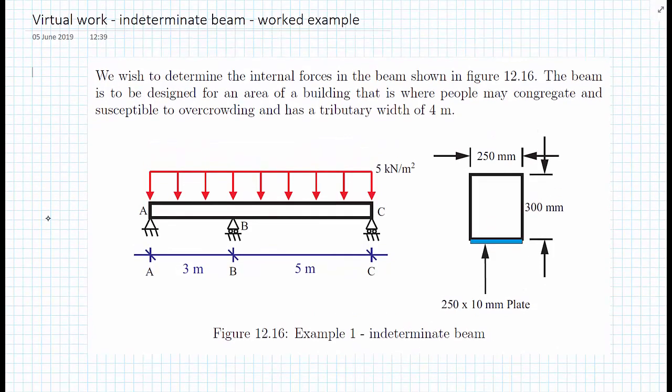In this video we're going to do a worked example of how to calculate the bending moment diagram for an indeterminate beam. We're given a description of the beam: it's eight meters long but has a support three meters from the left-hand side as well as supports at the left and right-hand sides.